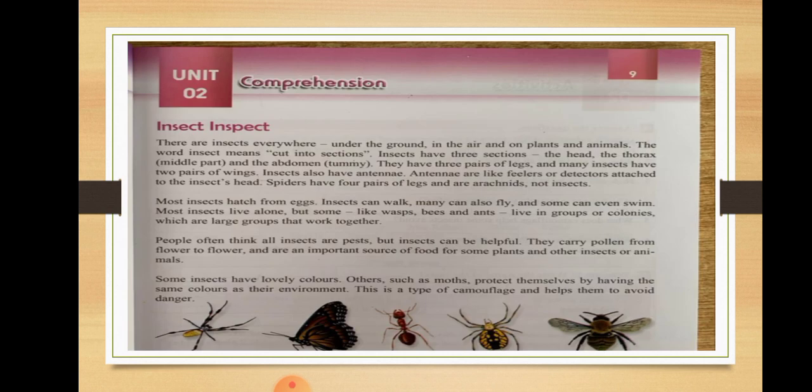Unit number 2 is on page number 9 and the title is 'Insect Inspect.' The title consists of 2 words. The first word, 'insect,' refers to small arthropods with 3 pairs of legs and generally 1 or 2 pairs of wings. The second word, 'inspect,' means to examine — and examine means to study something very closely.